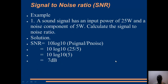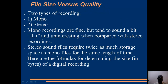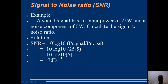For example, a sound signal has an input power of 25 watts and a noise component of 5 watts. The signal-to-noise ratio = 10 × log₁₀(25/5) = 10 × log₁₀(5) ≈ 7 decibels. You can try one with amplitude instead of power — in that case use 20 × log₁₀(amplitude of signal / amplitude of noise).